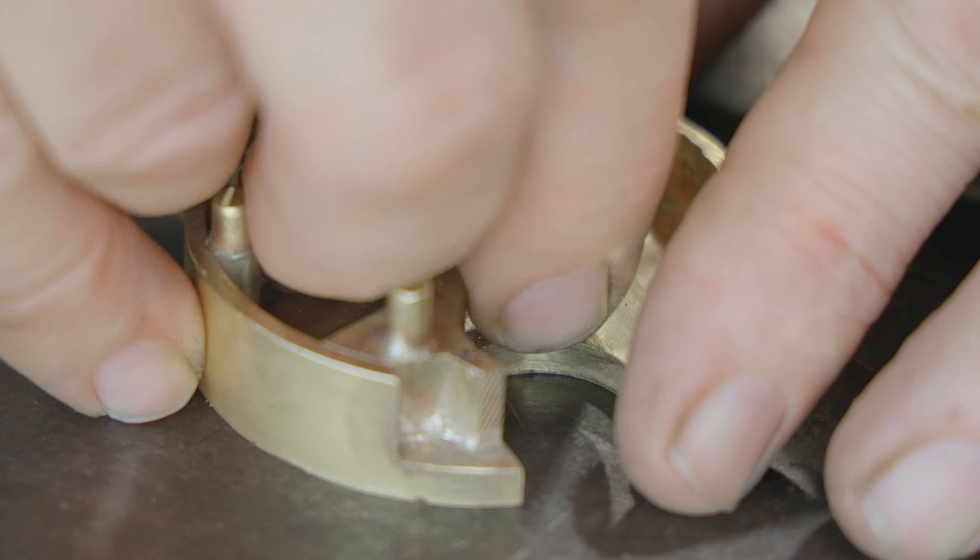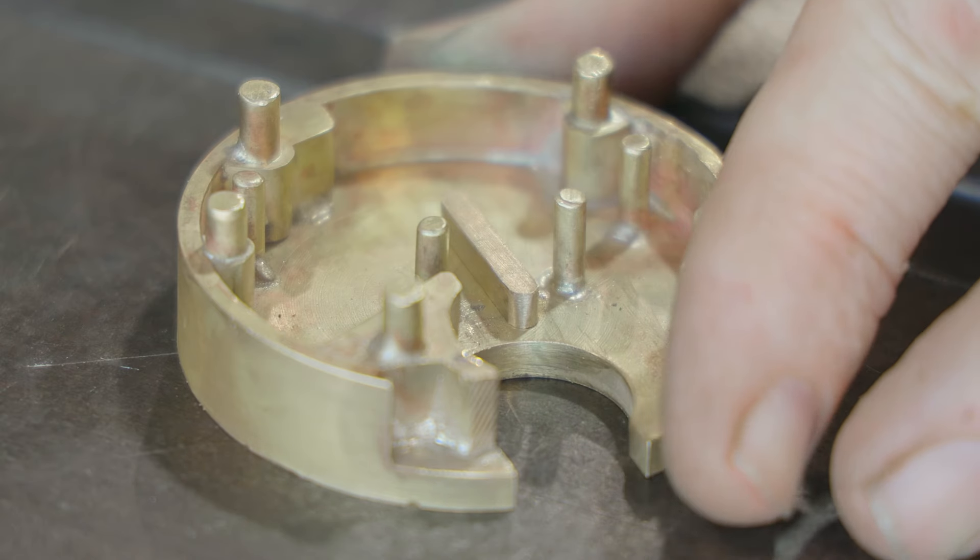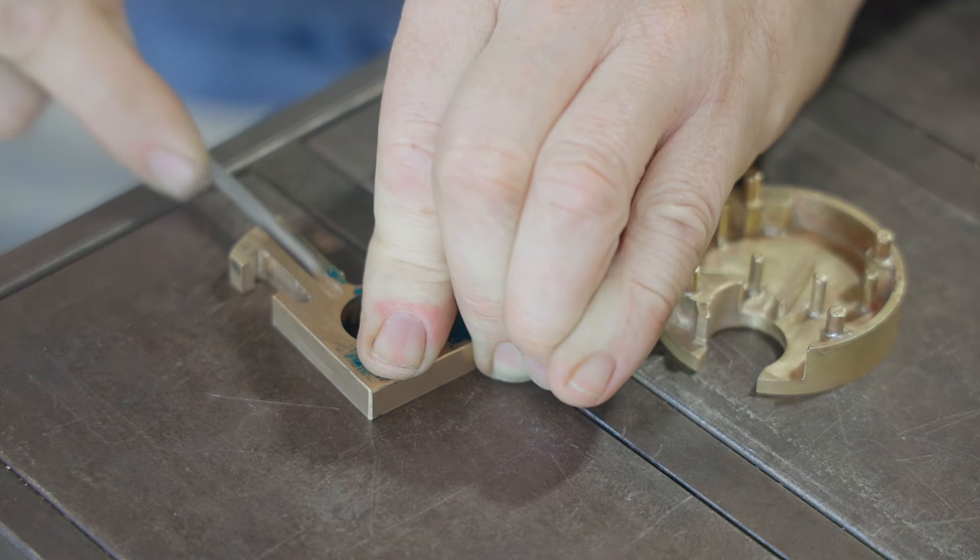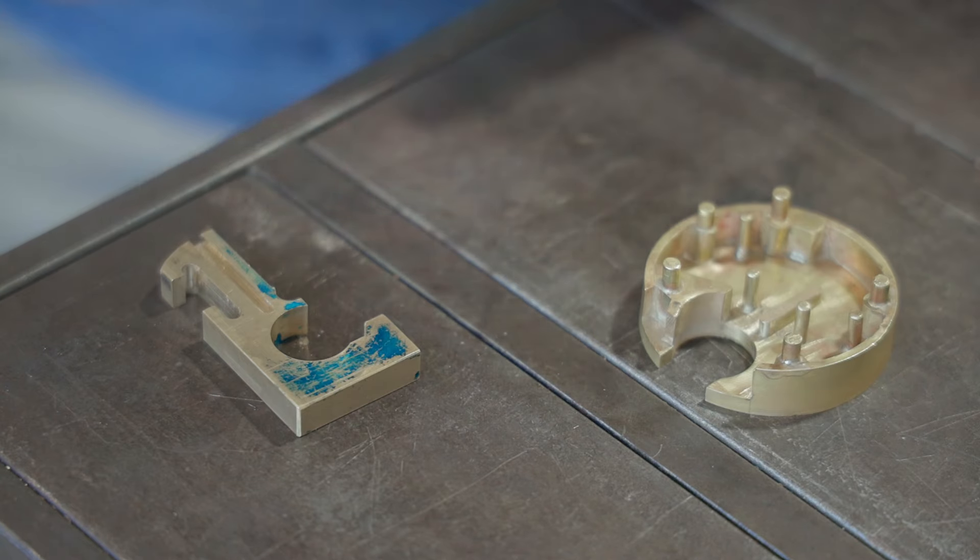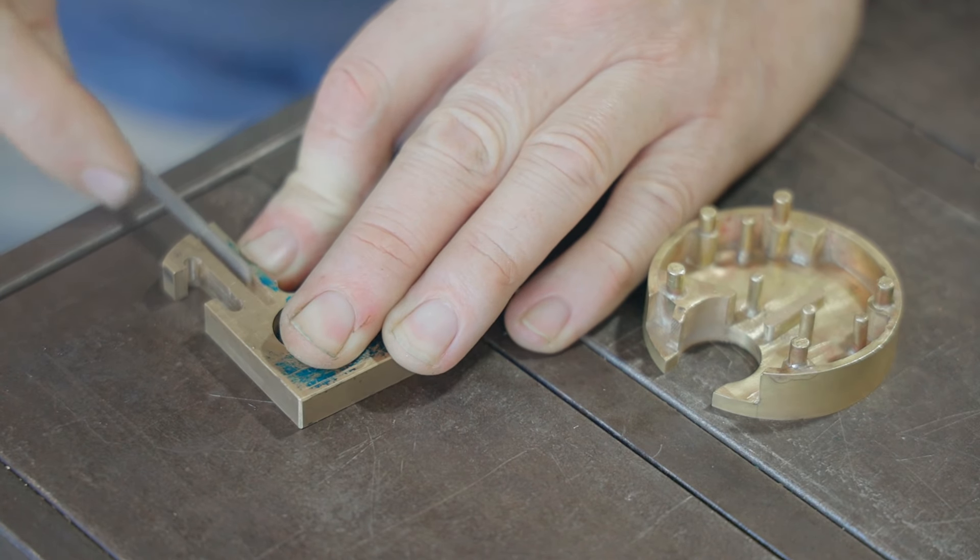I milled the slot in the case and the slot in the shackle with the same end mill, so I need to slightly open up the slot in the shackle to give it some room to move. I should have taken a touch more off the shackle when milling it but it's easy enough to do with a file.